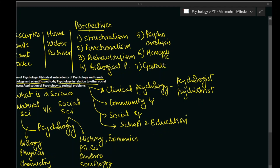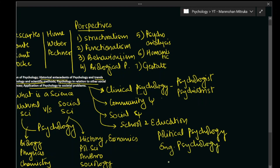We are going to look at political psychology, engineering psychology, military psychology, and the very important branch of organizational psychology — something that is also very important from the governance point of view. Probably a few other disciplines will also be covered.